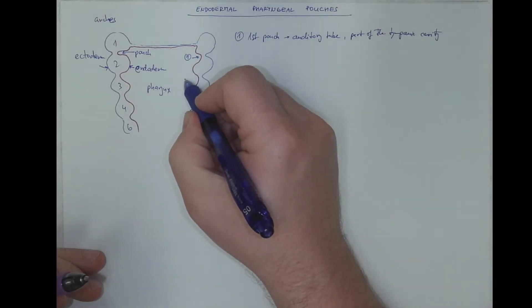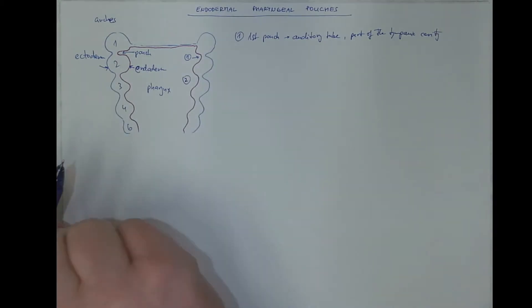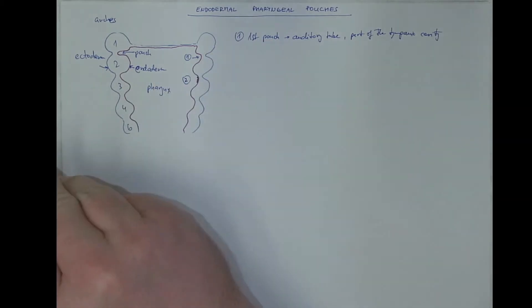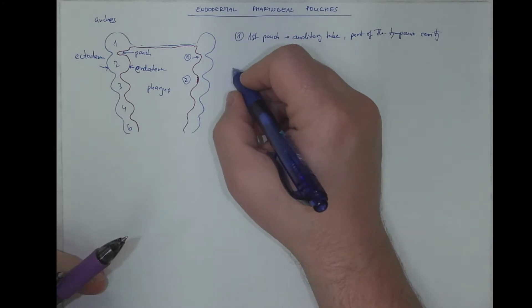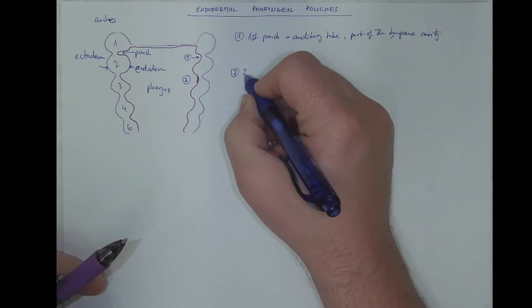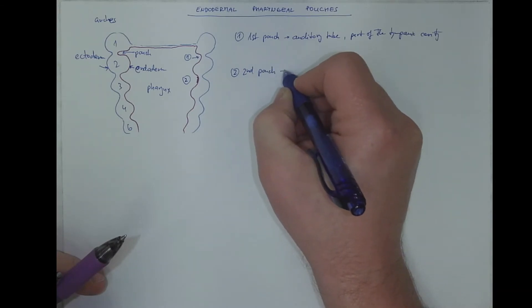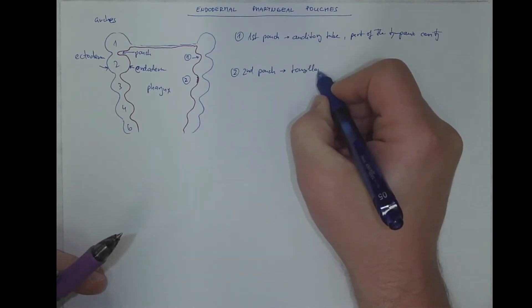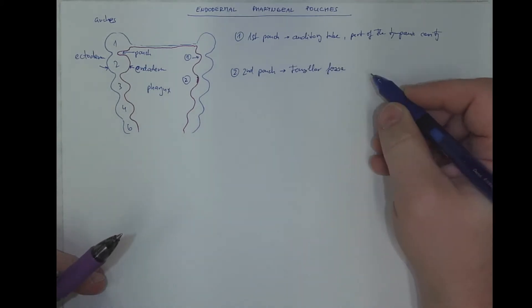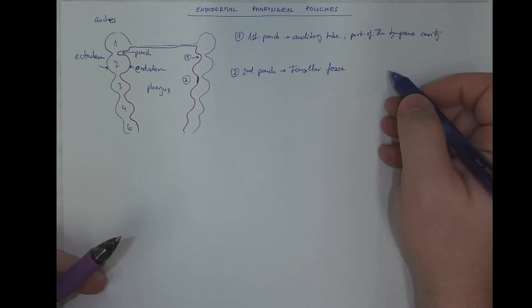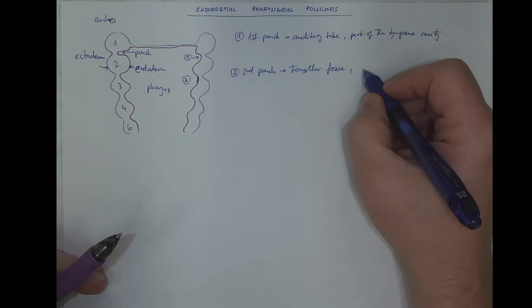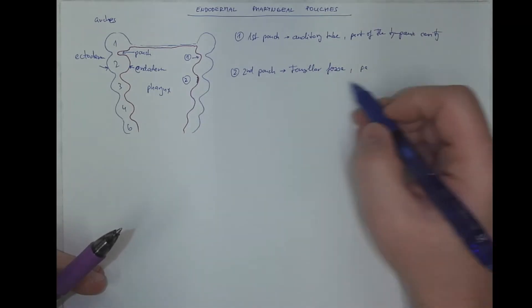The 2nd pouch, in the 2nd pouch there is a thickening of the endodermal epithelium that will give rise to the palatine tonsil. So the space will become the tonsillar fossa, the space between the palatoglossus and the palatopharyngeal arches, where there is a space for the palatine tonsil, and the epithelium of the palatine tonsil itself.